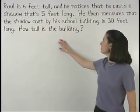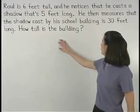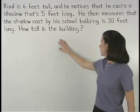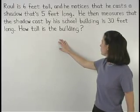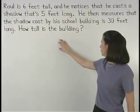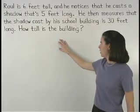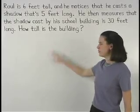Raul is six feet tall and he notices that he casts a shadow that's five feet long. He then measures that the shadow cast by his school building is 30 feet long. How tall is the building?